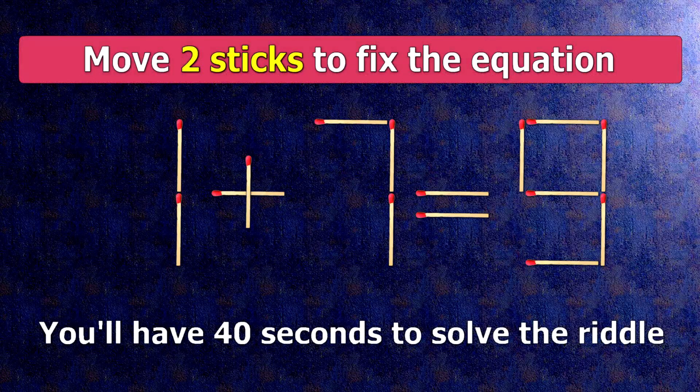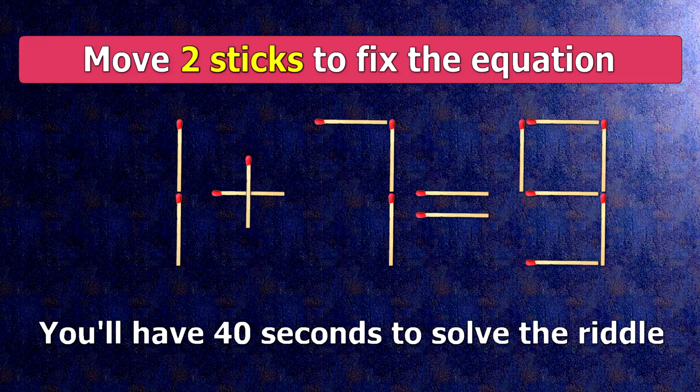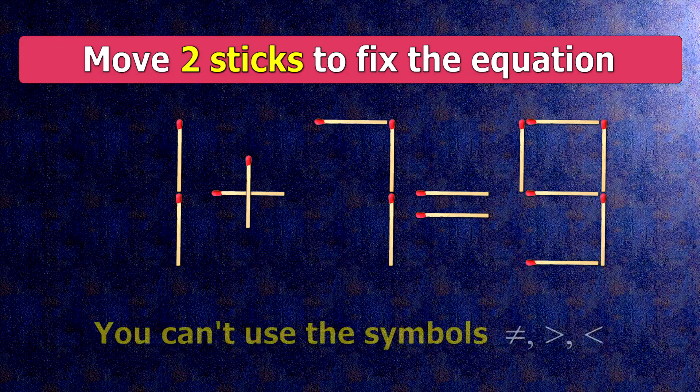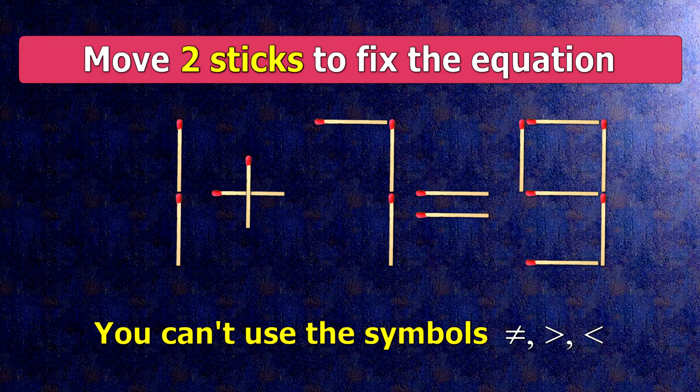We have the equality 1 plus 7 equals 9. Our equality is wrong. We need to move two matches to make our equality correct.